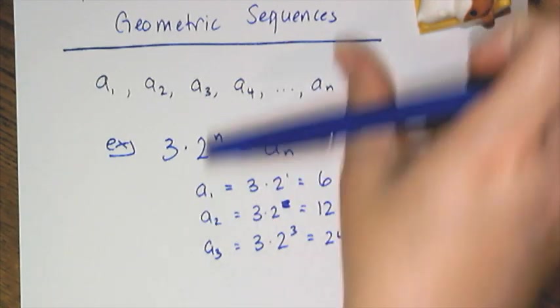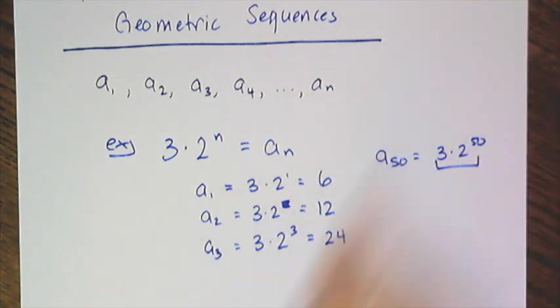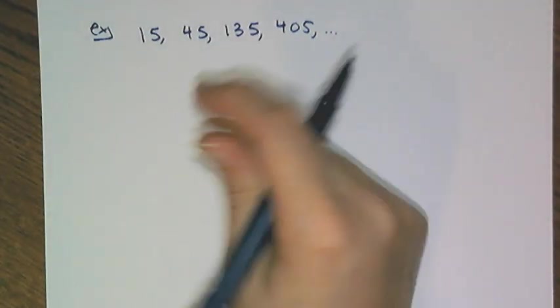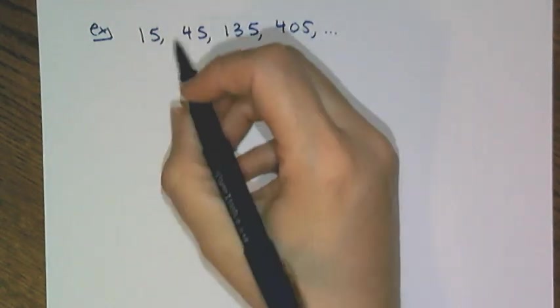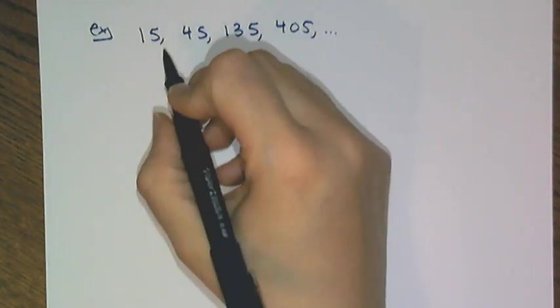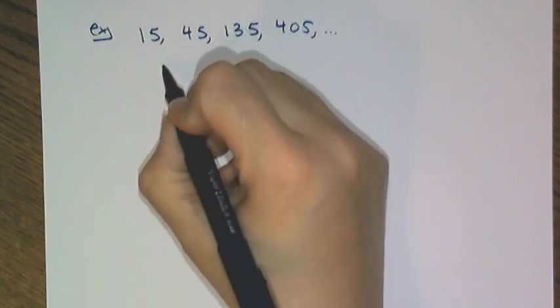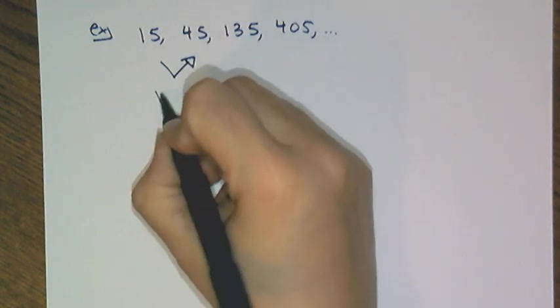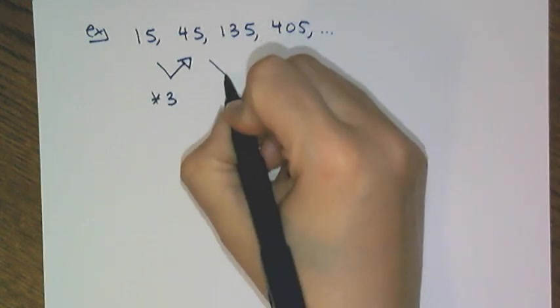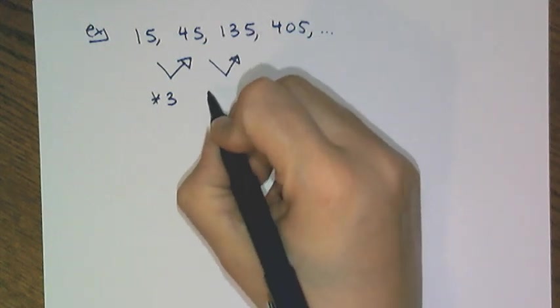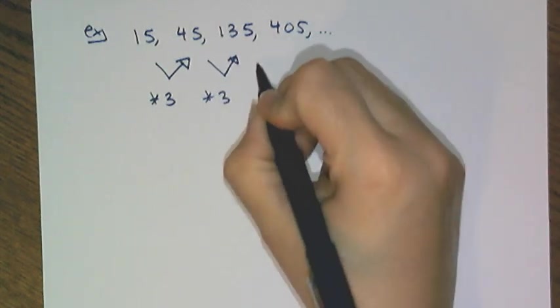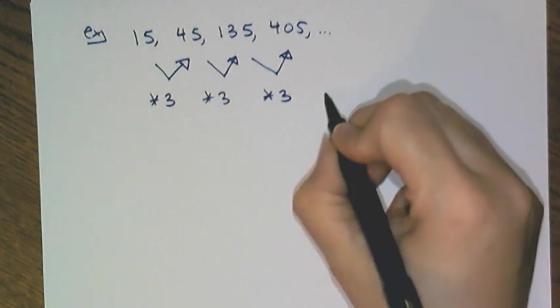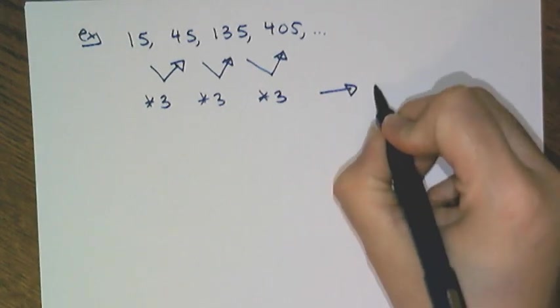The hard part of sequences is being able to write an explicit formula. So now let's try to use a very simple technique to find the explicit formula for this sequence. First thing I have to do is check to see if it's geometric, which means I have to see if there's a common ratio. So turning 15 into a 45 is times 3, and 45 into 135 is also times 3, and 135 to 405 is also times 3. So there is indeed a common ratio, and it is 3.